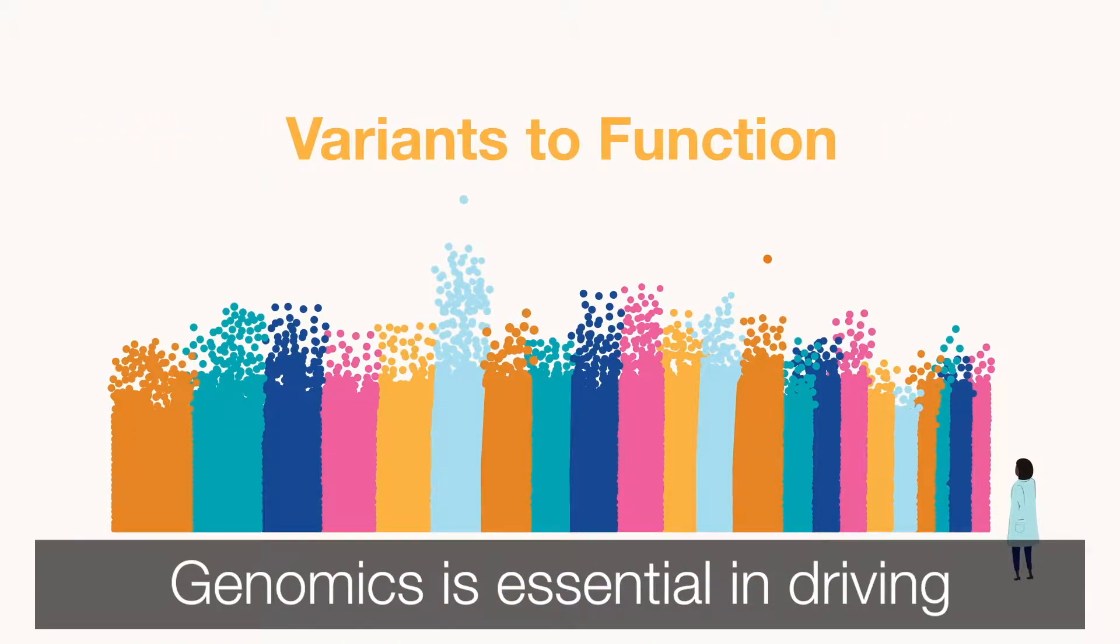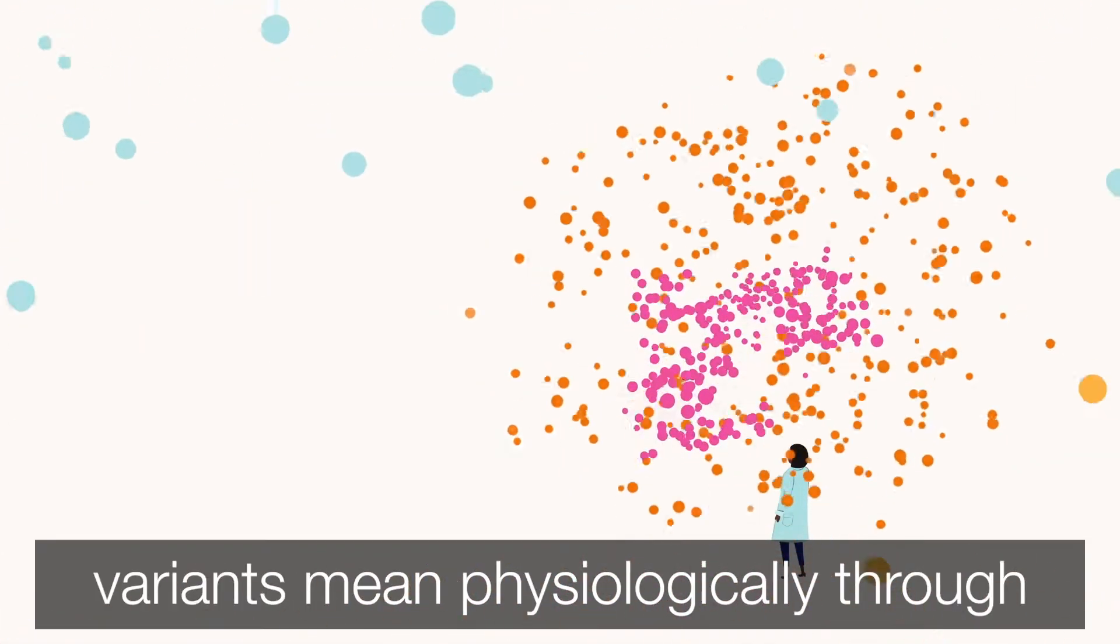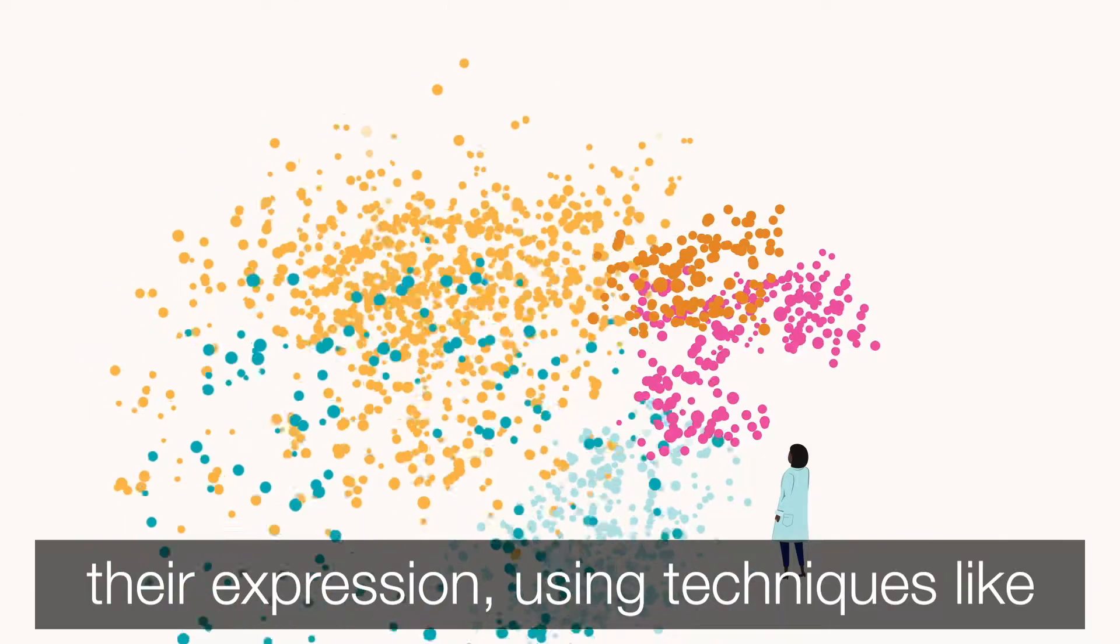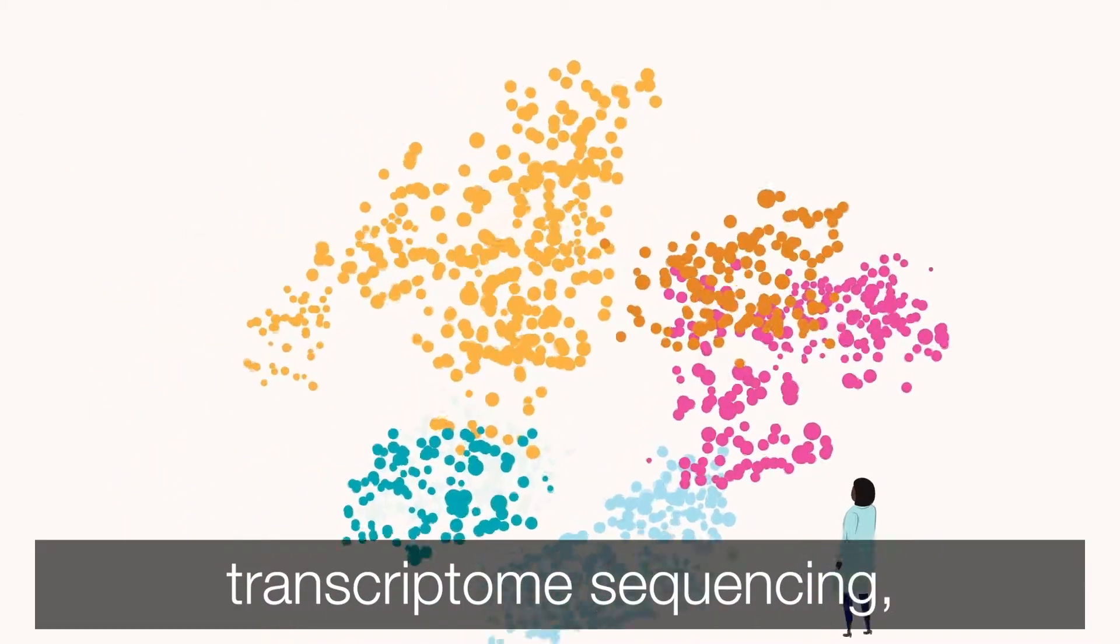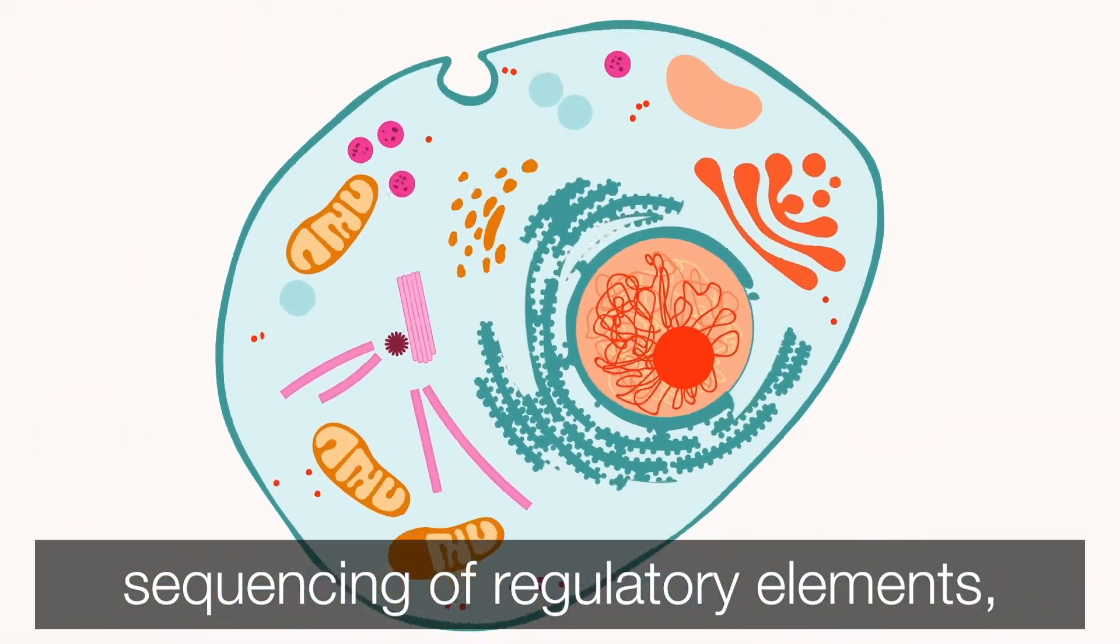Genomics is essential in driving this research. We can understand what these variants mean physiologically through their expression, using techniques like transcriptome sequencing, single-cell sequencing, sequencing of regulatory elements, and more.